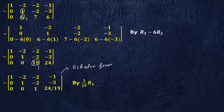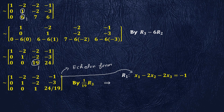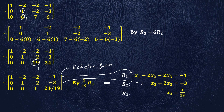Now we convert this augmented matrix into equations. Row 1 will be converted into the equation: x1 minus 2x2 minus 2x3 equals minus 1. Row 1 has been written in this fashion. Similarly, row 2 can be written in this form. And likewise, row 3 can also be written in this form.